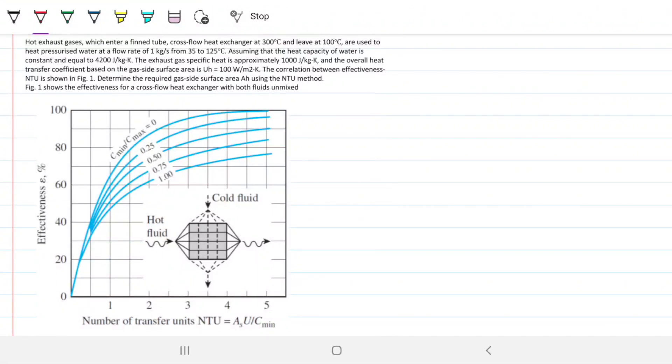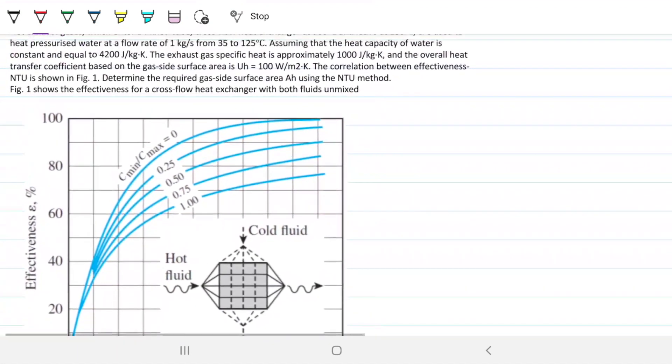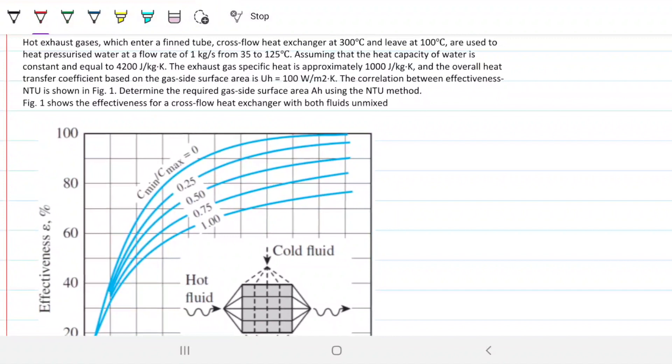So hot exhaust gases which enter a thin tube cross flow heat exchanger at 300 celsius and leave at 100 celsius are used to heat pressurized water at a flow rate of 1 kg per second from 35 to 125 celsius. Assuming that the heat capacity of water is constant and equal to 4200 joules per kilogram kelvin.